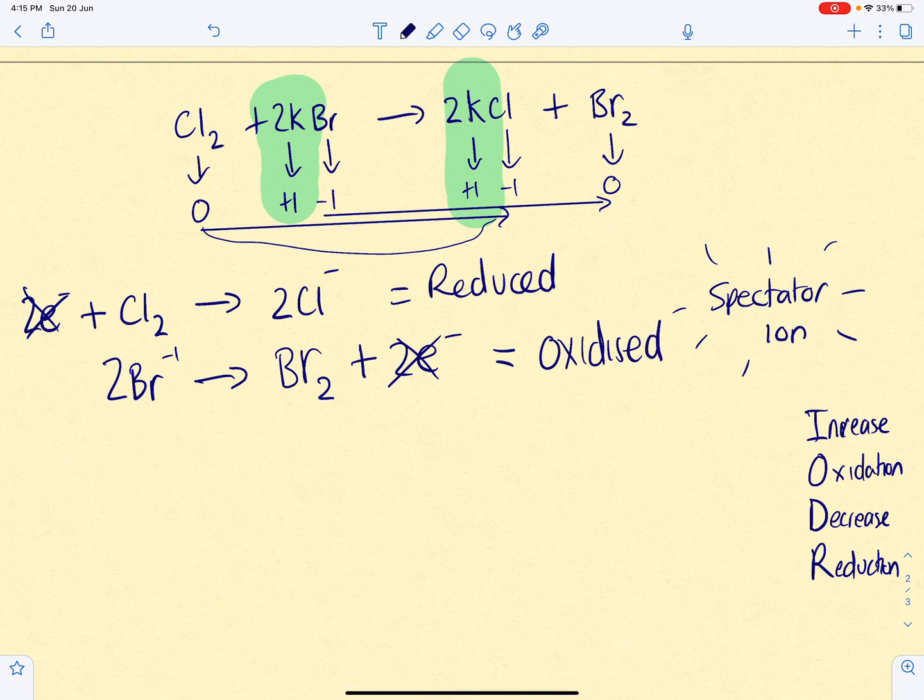If you don't like ion and do redox, then you can do OIL RIG. Oxidation is loss of electrons and reduction is gain. So, you can see that the chlorine here has gained electrons. It's got more negative. It's gained electrons. And the bromine gave its electrons away.